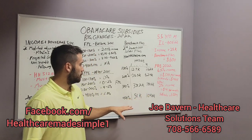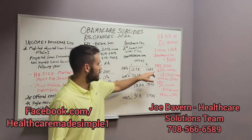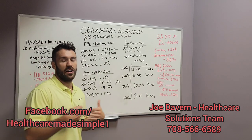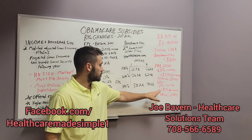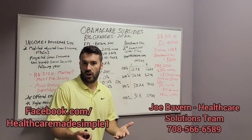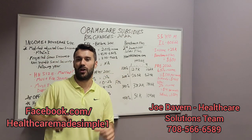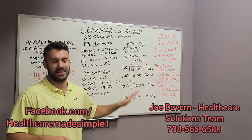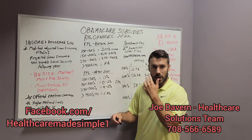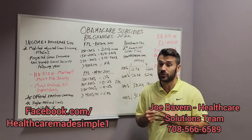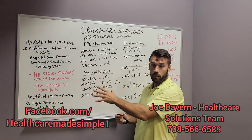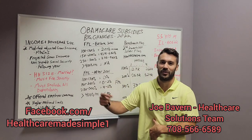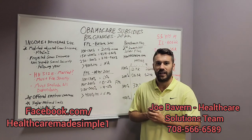Lastly, aside from the monthly subsidy — whether it's $465 or $559 moving forward — there are other benefits you may qualify for. If you are under 250% federal poverty level, there's something called cost sharing: on silver level plans, they take the deductibles and lower them quite substantially. I do health insurance in 22 different states. If you have any questions or want help signing up for 2022, reach out right away. Call me at 708-566-6589. Depending on when you see this video, we could be in the middle of open enrollment — call, text, or email me and we'll get the ball rolling.